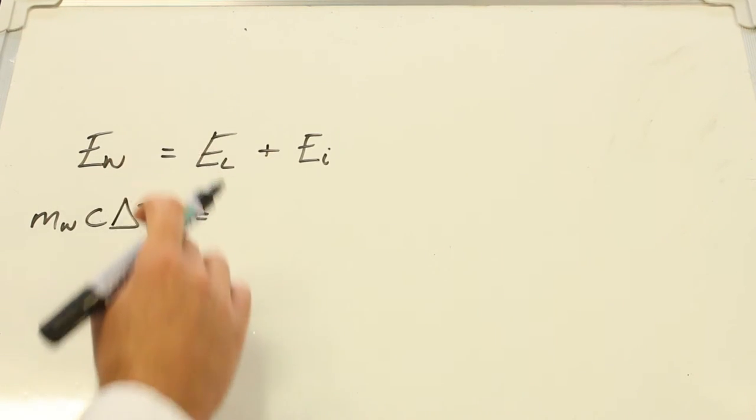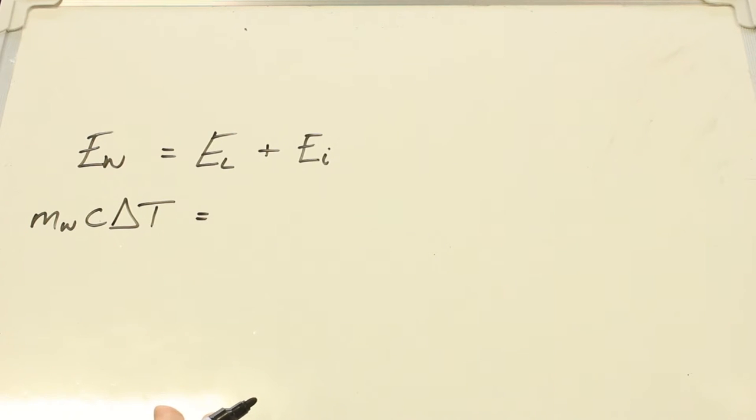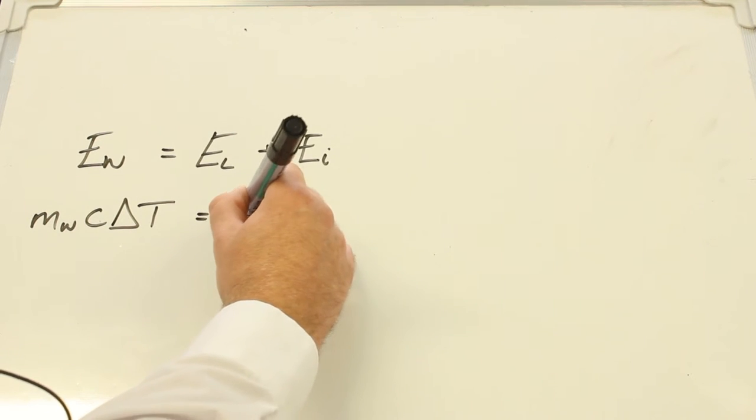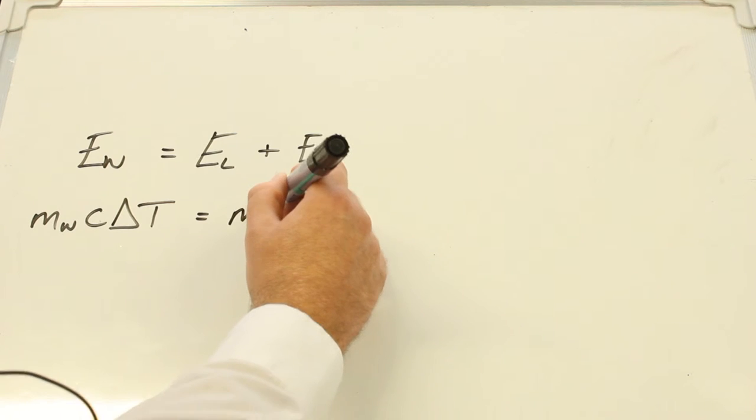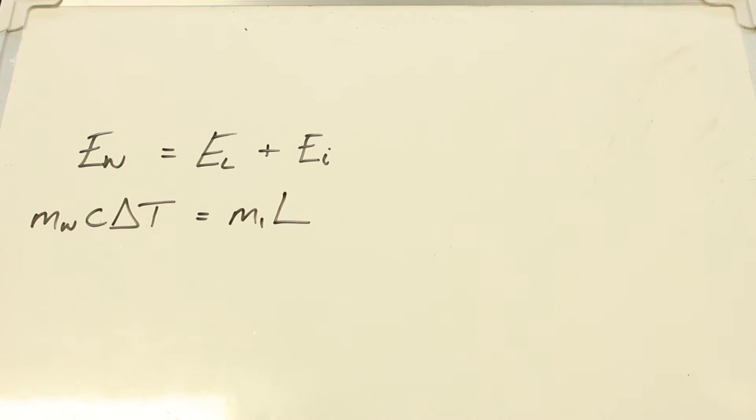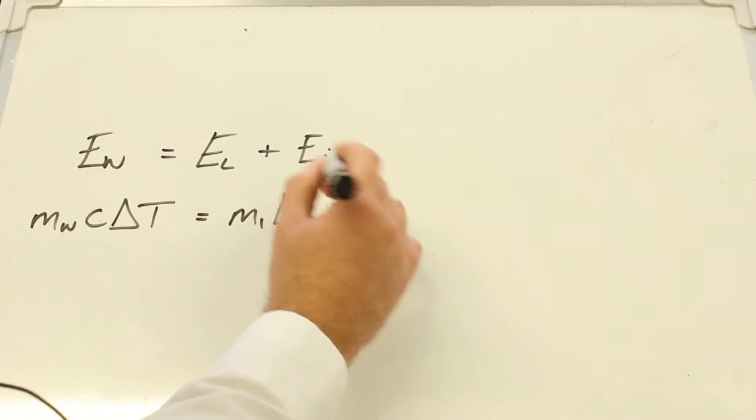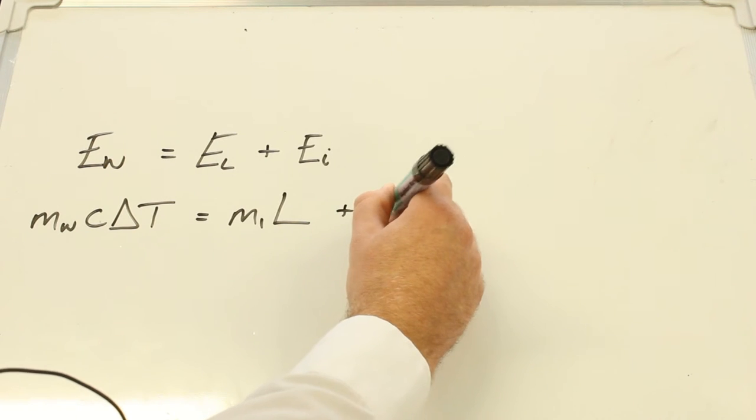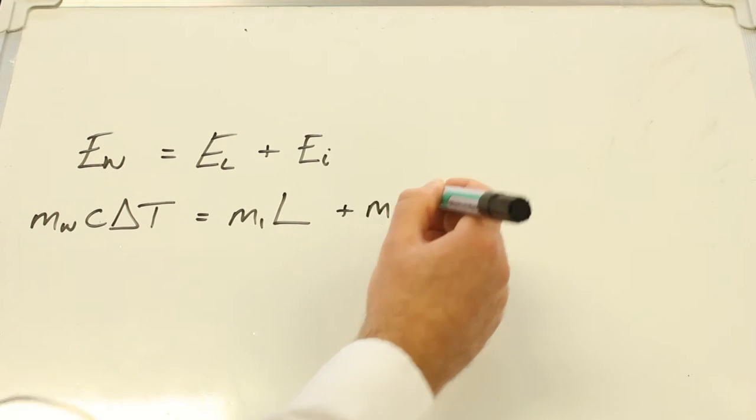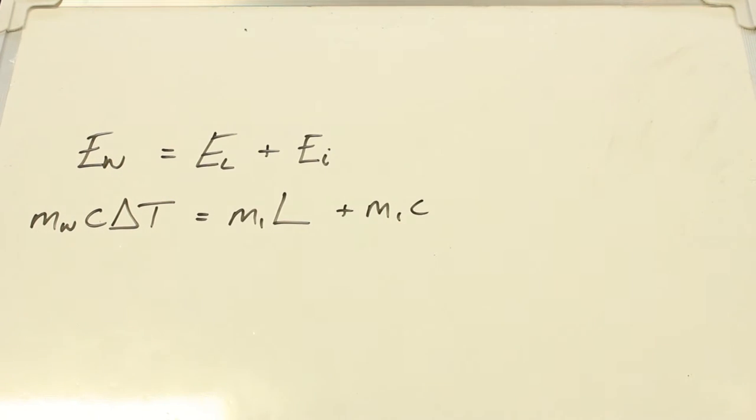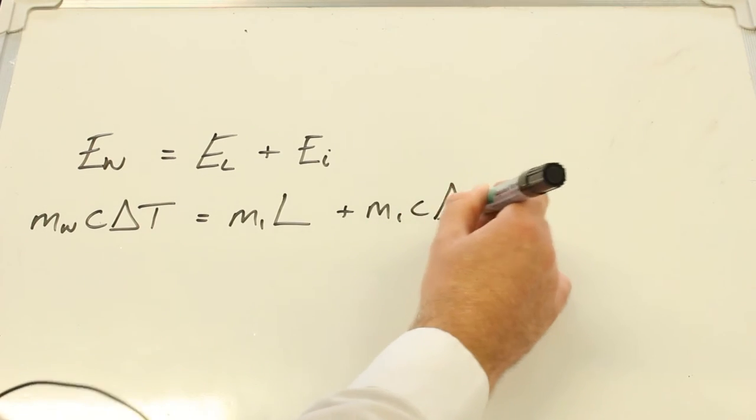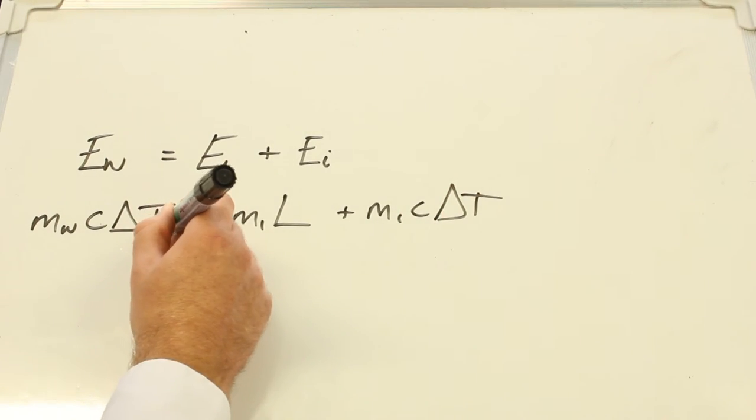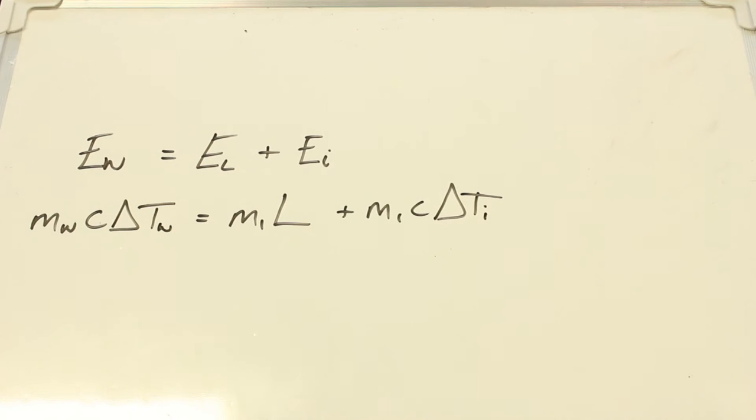The specific latent heat of fusion of ice is going to be the mass of the ice times by the specific latent heat of fusion. And then the energy to raise the temperature of the ice is going to be the mass of the ice times by the specific heat capacity of water times by the temperature change of the ice.